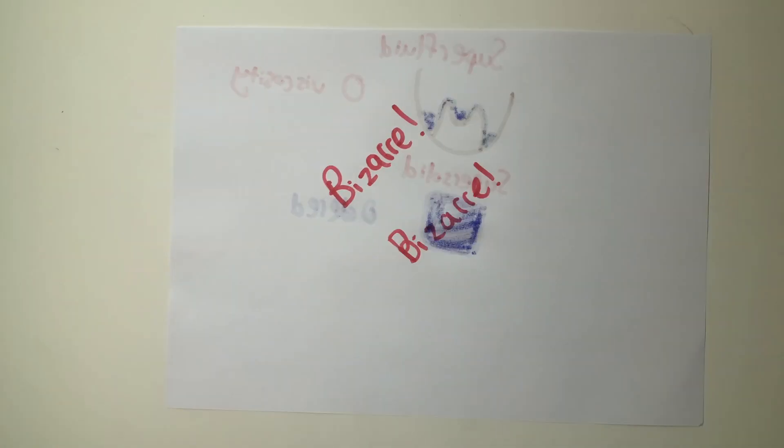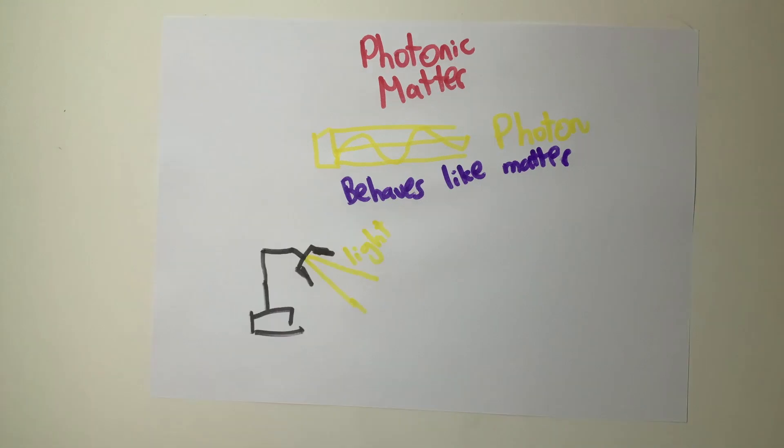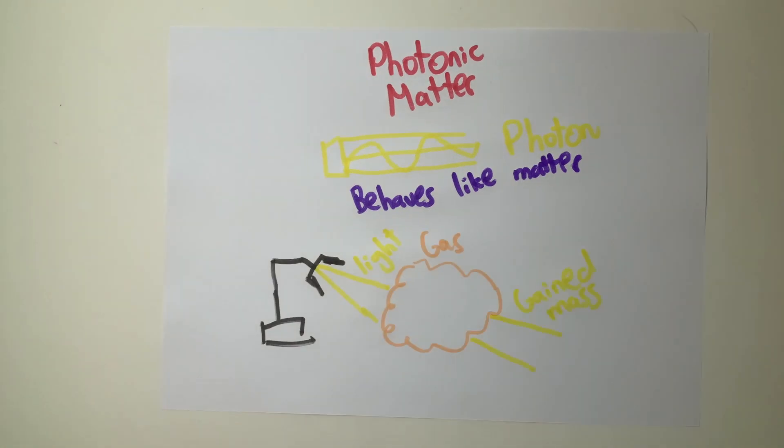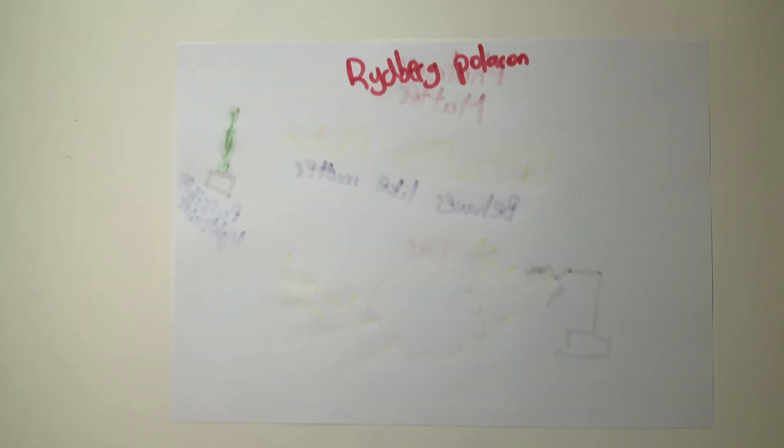Moving on, we journey into the realm of the bizarre. Firstly, there is photonic matter in which photons, the elementary particles of light, behave like matter. The photonic matter is light with mass after interacting with gas.